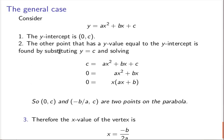So consider the more general case where y equals ax squared plus bx plus c. The y-intercept is at 0, c. That's easy to see. The other point that has a y value equal to the y-intercept can be found by solving this equation, which leads to this equation, which always factors because an x will factor out. And we can therefore find two points that are on the curve: 0, c and -b/a, c are two points on the parabola that have the same height.